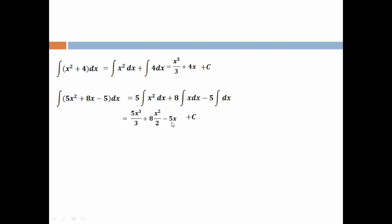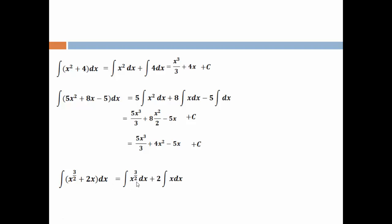Simplifying: 5x³/3 + 4x² − 5x + c. Next one: ∫(x^(3/2) + 2x) dx. That will be ∫x^(3/2) dx + 2·∫x dx. Applying the rule, 3/2 is treated as n, so we get x^(3/2 + 1)/(3/2 + 1) = x^(5/2)/(5/2). And 2·∫x dx = x². Simplifying x^(5/2)/(5/2) gives (2/5)·x^(5/2). So the answer is (2/5)x^(5/2) + x² + c.